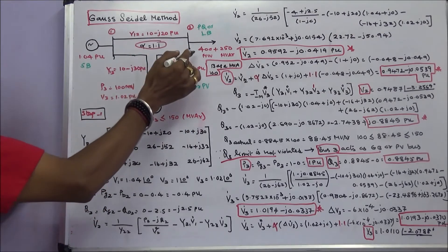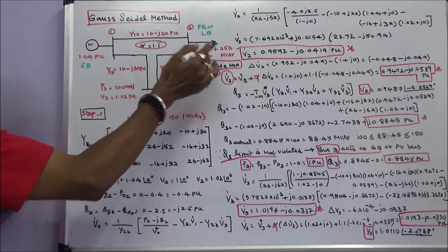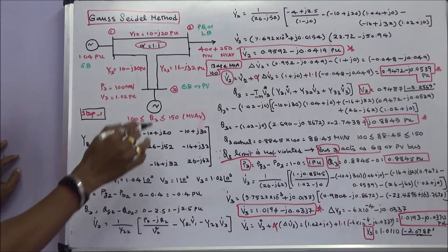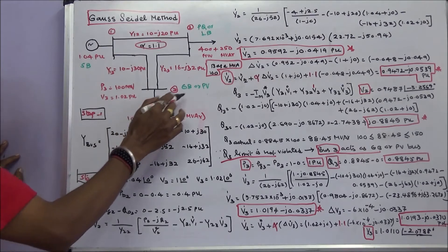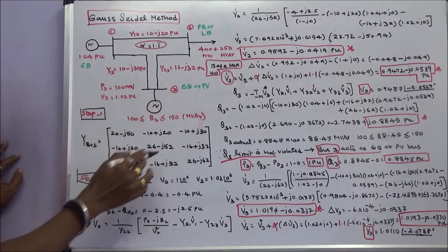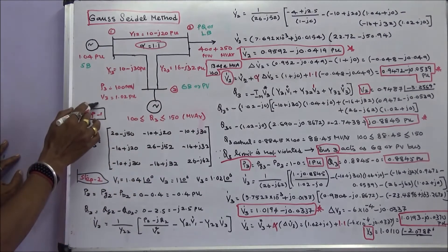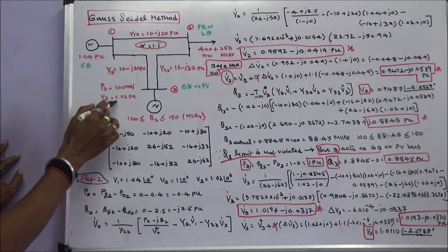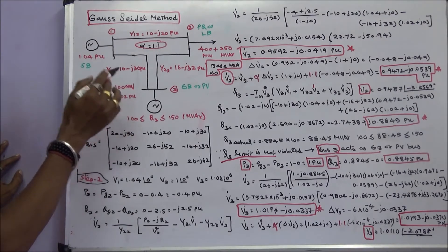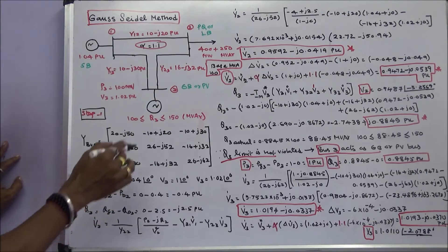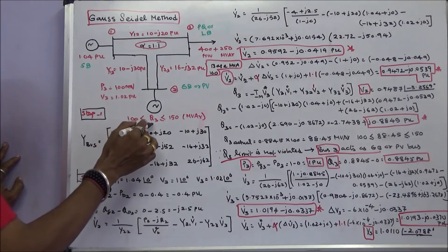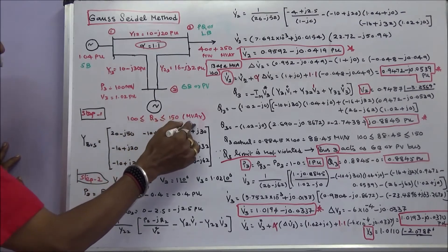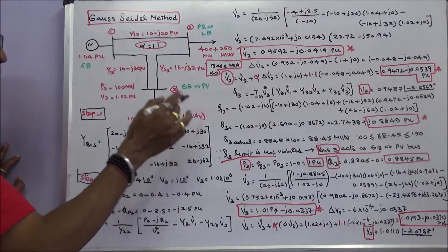For Bus 2, P is 400 megawatts and Q is 250 megawatt ampere reactive. Bus 3 is a generator bus or PV bus, where P and V are given: P is 100 megawatts and V3 is 1.02 per unit. The reactive power limit is given: minimum is 100 and maximum is 150 megawatt ampere reactive.